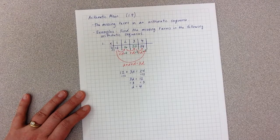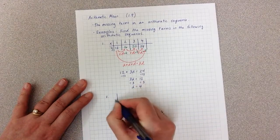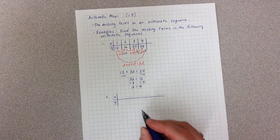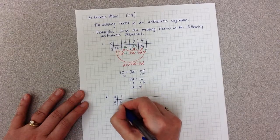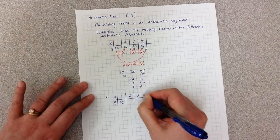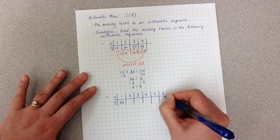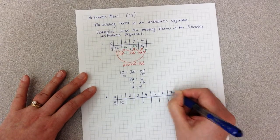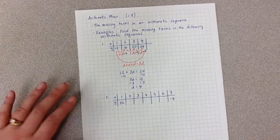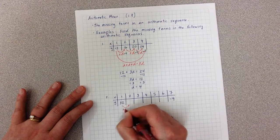Our second example is a bit longer. In this arithmetic sequence, we're given the first term, which is 32, and then all the way out to the 7th term, which is negative 4. Again, remember that I'm adding D each time.